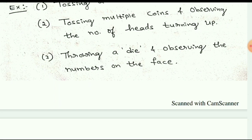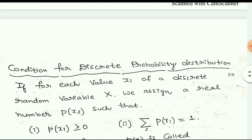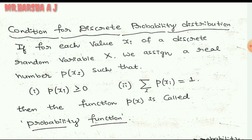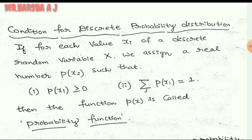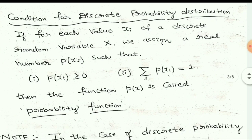Now we will go for conditions for discrete probability distribution. Throughout this topic, remember these two conditions. If for each value x_i of a discrete random variable X we assign a real number p(x_i), it must satisfy two conditions: first, p(x_i) should be greater than or equal to 0; second, the summation of all p(x_i) should equal 1.